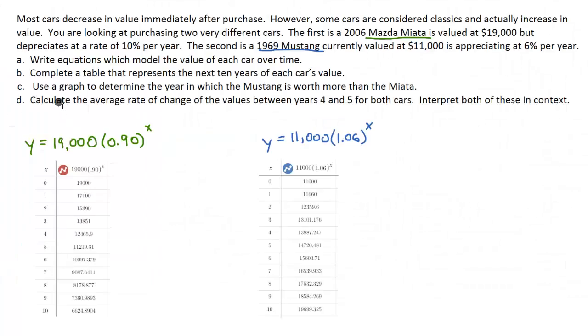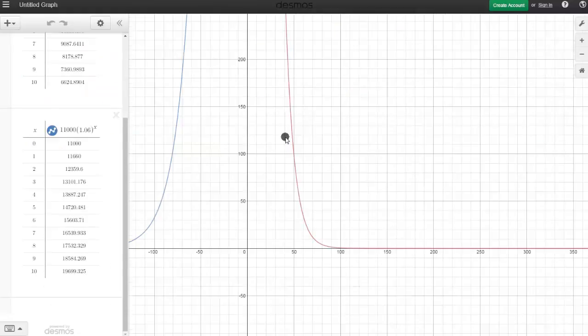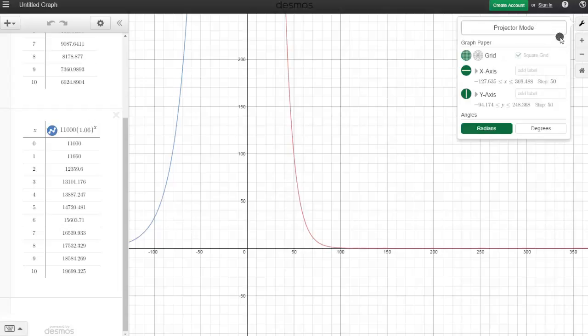Part C says that we need to come up with a graph that shows us when the Mustang ends up being worth more money than our Mazda. So we're going to go back to our graph. Now I'm back in my graph, and we want to figure out when our Mustang becomes more valuable than our Mazda. So our Mustang is our blue curve right here. Our Mazda is our red one. And we want to find the point of intersection. So what we're going to do is click the top right-hand corner button up here where it says graph settings and change our window.